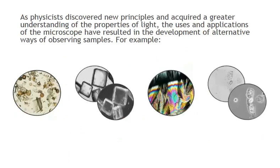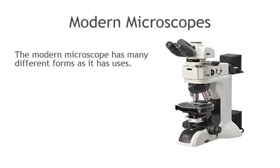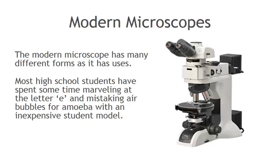As physicists discovered new principles and acquired a greater understanding of the properties of light, the uses and applications of the microscope resulted in the development of alternative ways of observing samples — for example, bright field, dark field, polarized light microscopy, and phase contrast. Modern microscopes are very versatile and much easier to use than their predecessors. The modern microscope has as many different forms as it has uses. Most high school students have spent some time marveling at the letter E and mistaking air bubbles for amoeba with an inexpensive student model.